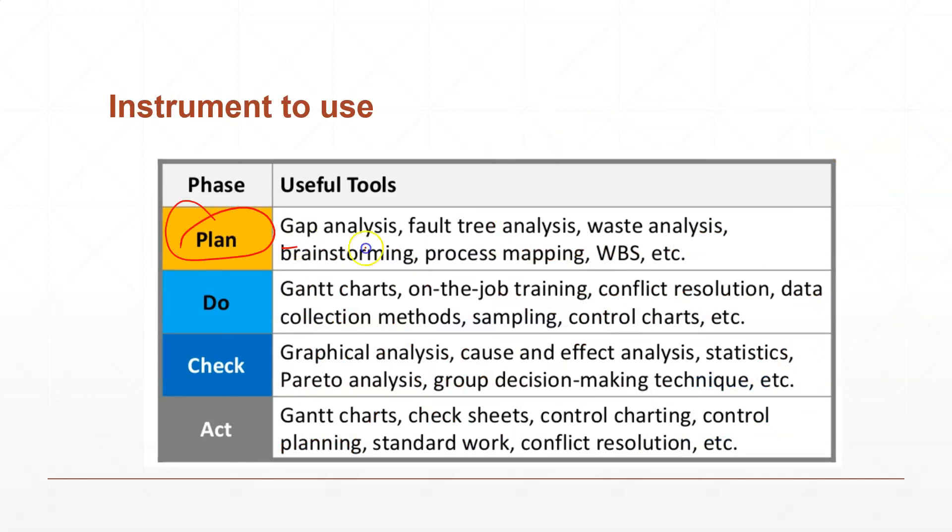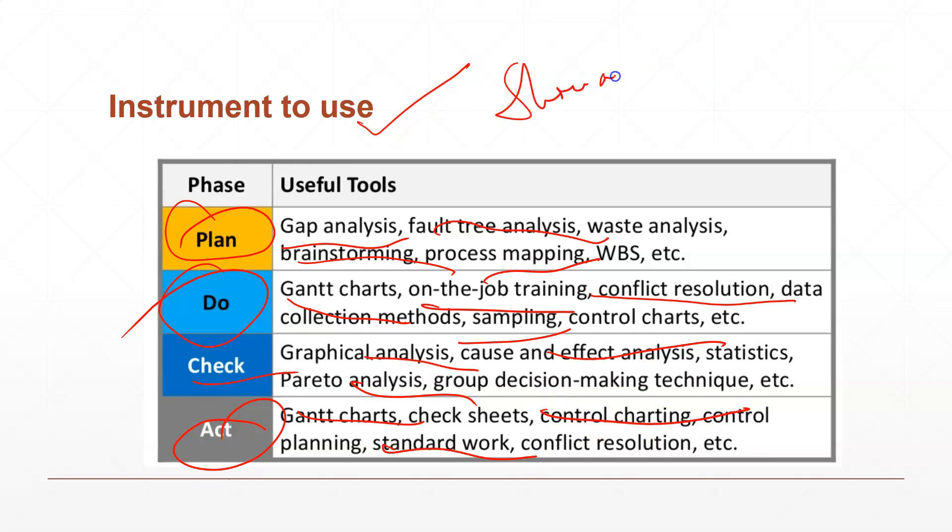Which instruments are used at different stages? When you are planning, you can use gap analysis, flowchart analysis, brainstorming, process mapping. If you are working on the Do stage, you can use Gantt charts, sampling, conflict resolution techniques, on-the-job training. At the Check stage: graphical analysis, comparative analysis, cause and effect analysis, statistical analysis - you can use these. At different levels, at the Act stage you can use Gantt charts again, or you can use standard work methods, control charts. In this way you can implement the Shewhart cycle.